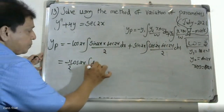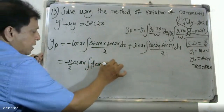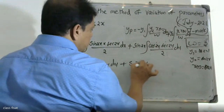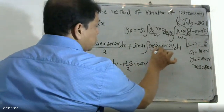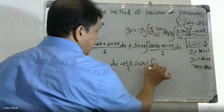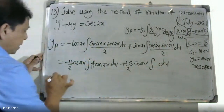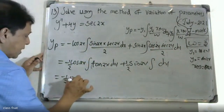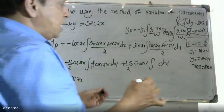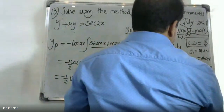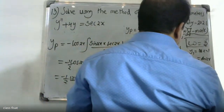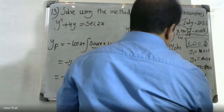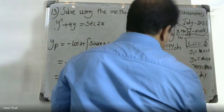For the integral of tan 2x, we write it as the integral of sin 2x divided by cos 2x dx.